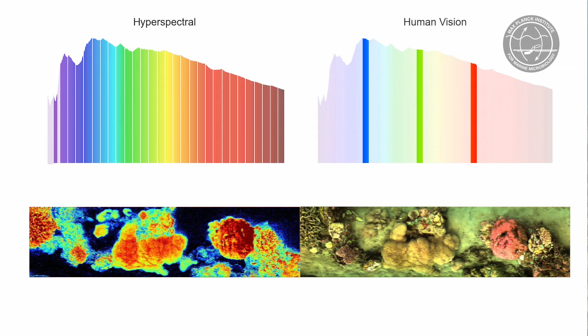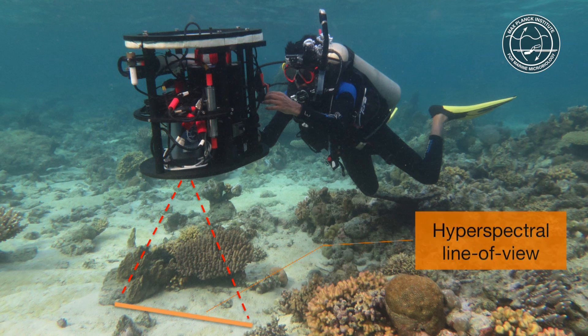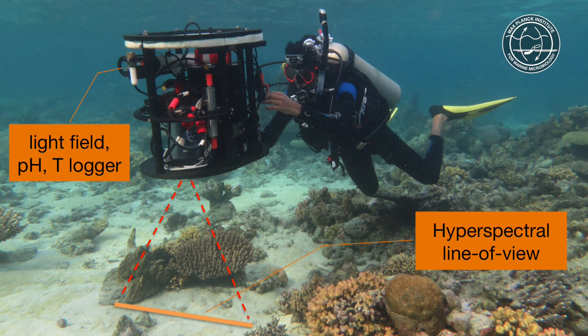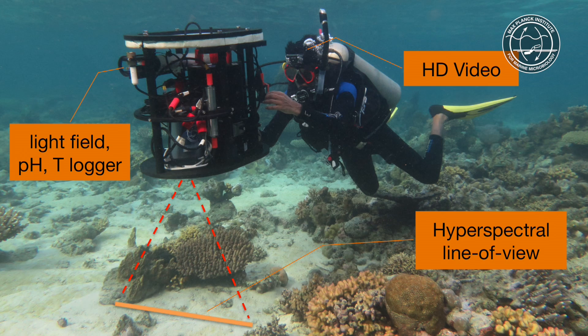The device used for scanning reefs underwater is called HyperDiver. It consists of the actual hyperspectral imager, but it can also measure the light field, pH, and temperature of the water. On top of that, the diver films the reef with an HD camera.